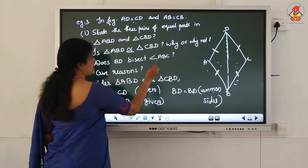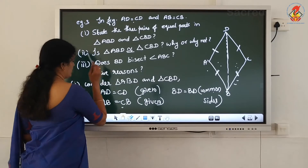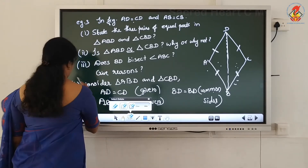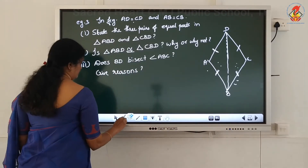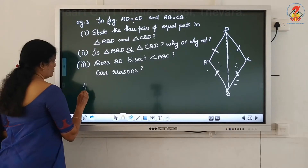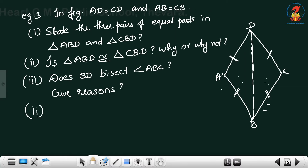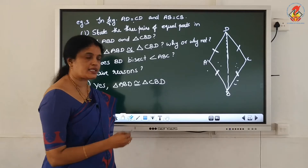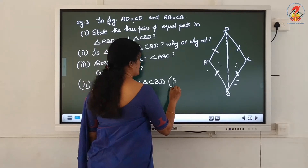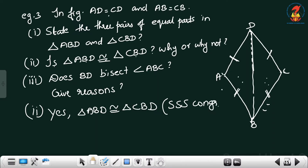Does BD bisect angle ABC? That is the second question. Is triangle ABD congruent to triangle CBD? Why or why not? Yes, triangle ABD is congruent to triangle CBD. What is the reason? The reason is SSS congruence criterion - Side, Side, Side. Three sides of one triangle are equal to the 3 sides of another triangle, therefore these 2 triangles are congruent.